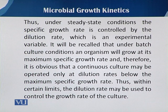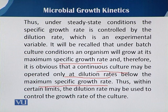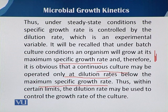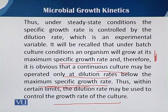Under batch culture conditions, an organism will grow at its maximum specific growth rate. Therefore, in a continuous culture that can be operated only at a dilution rate below the maximum specific growth rate. Within a certain limit, the dilution rate may be used to control the growth rate of the culture — by adjusting the dilution rate in continuous culture, we can control the growth rate.